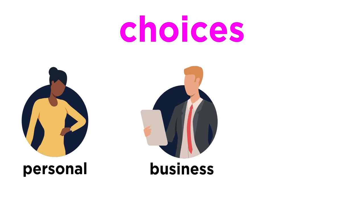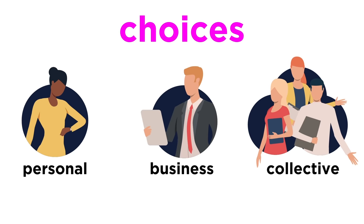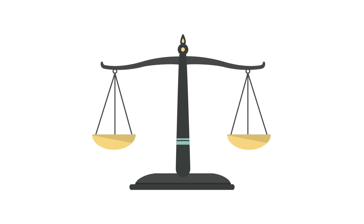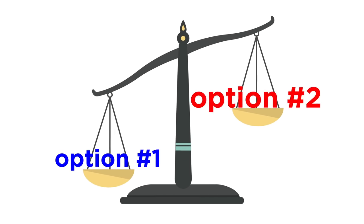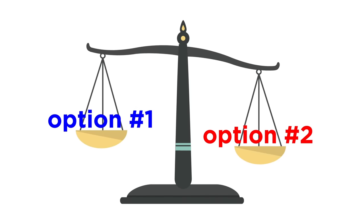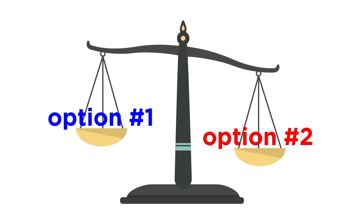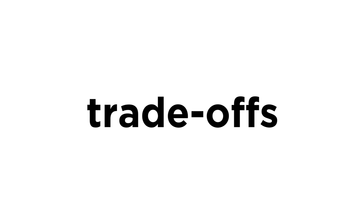We make personal choices, business choices, and collective choices differently, but we all do so based on scarcity. We can't do everything or have everything, so we must weigh our options and make the best choice for ourselves that we can, based on our situation. All choices involve trade-offs.